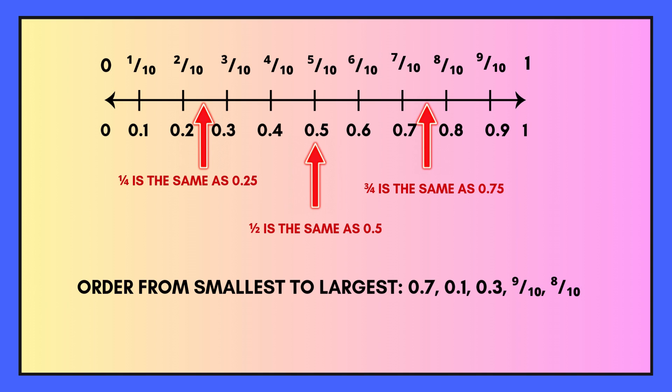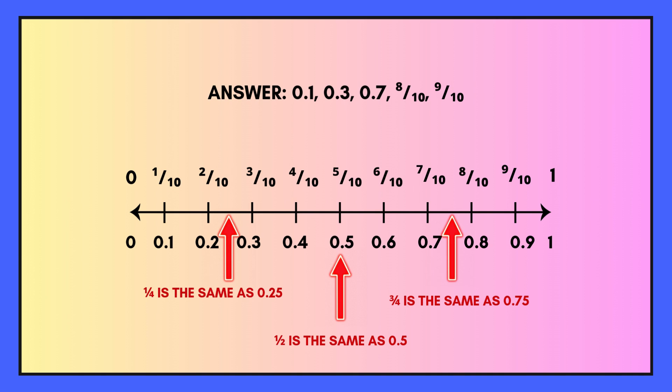Try ordering the following decimals and fractions in order of size. Pause the video while you work out your answer. You need to order: 0.7, 0.1, 0.3, nine tenths, and eight tenths.